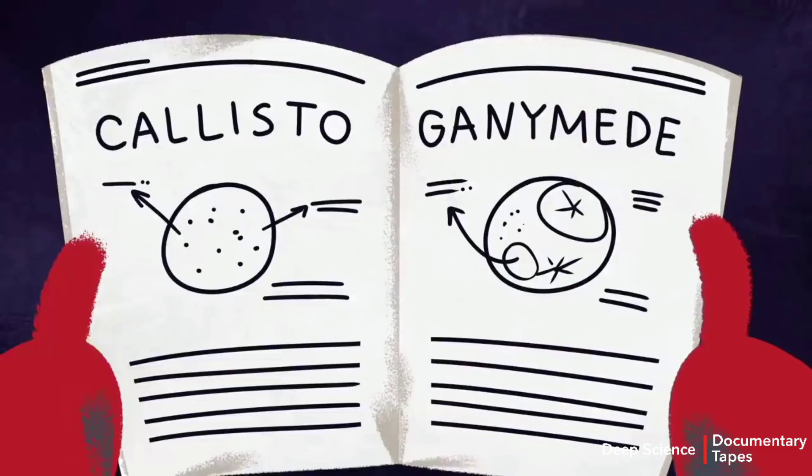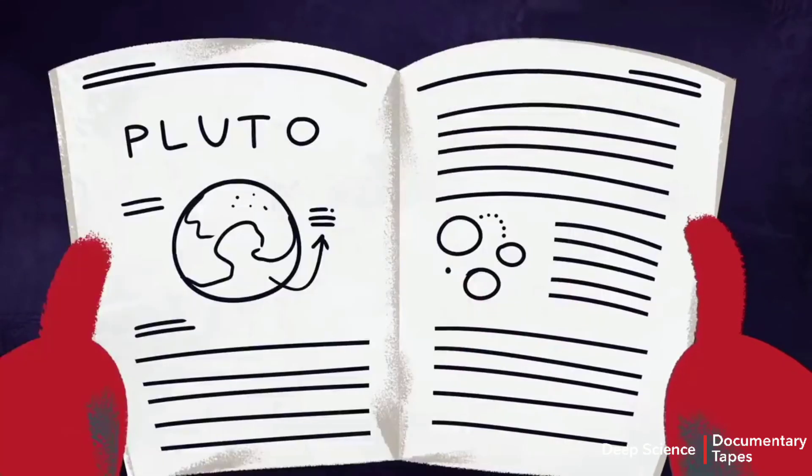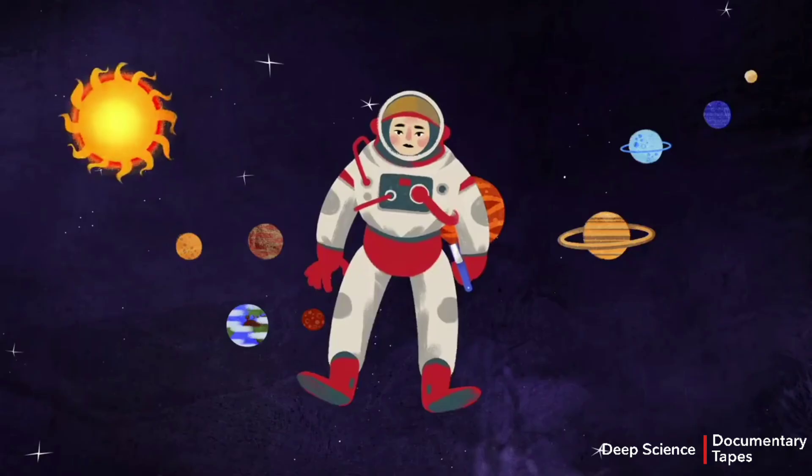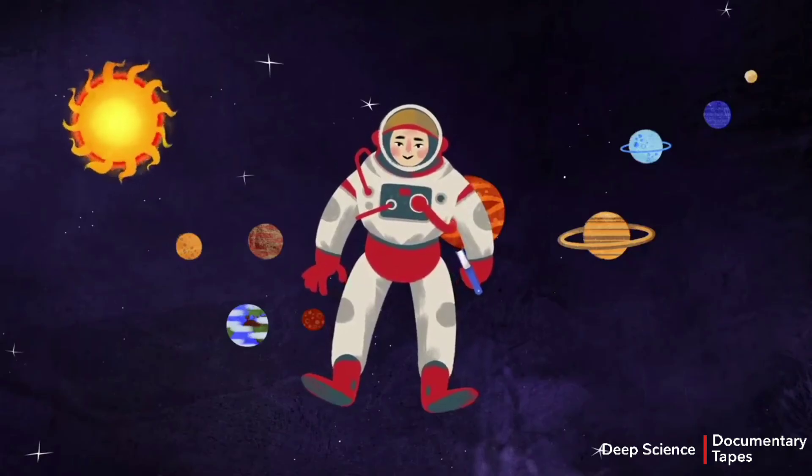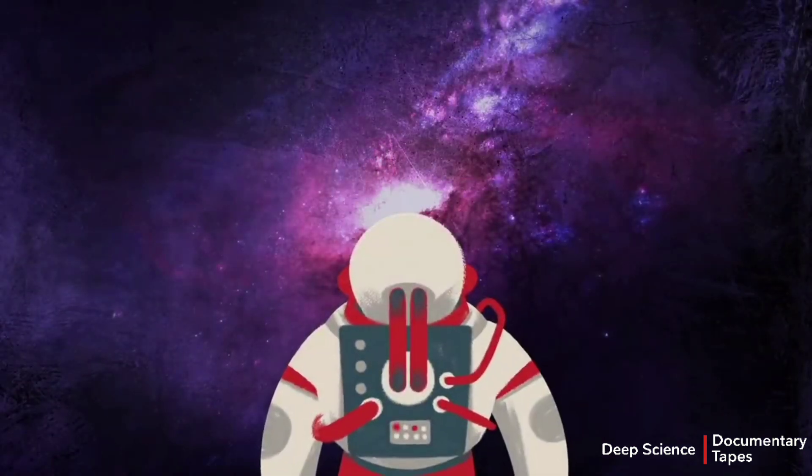These include Jupiter's moons Callisto and Ganymede, Neptune's Triton, and even Pluto. If there's this much potential for life to exist in our own tiny solar system, what unimagined secrets might the rest of the universe contain?